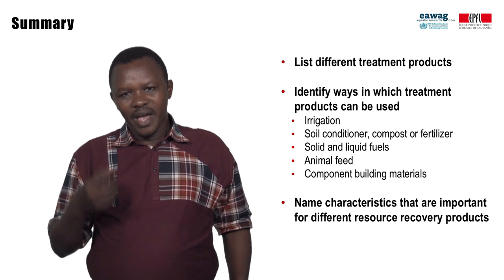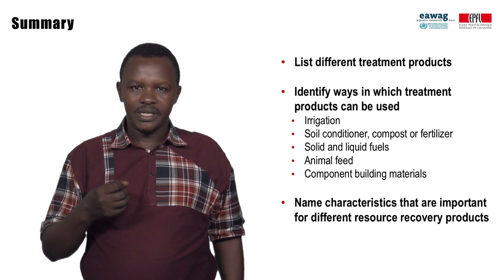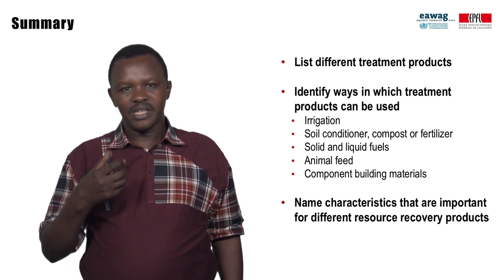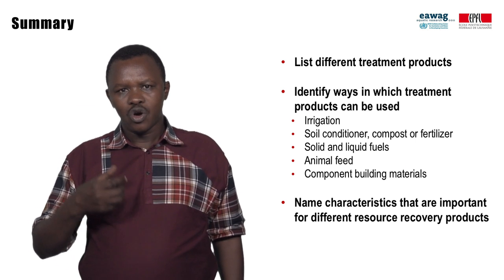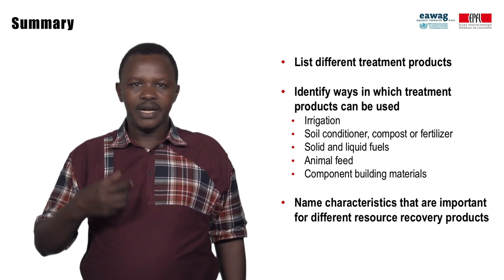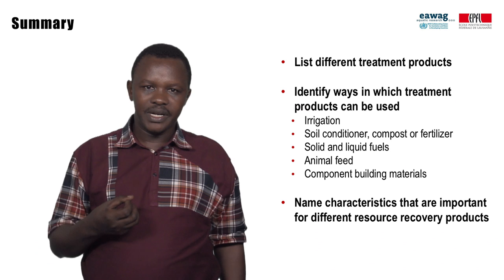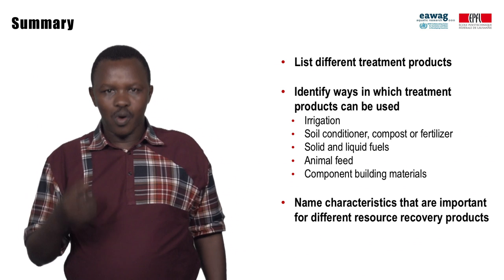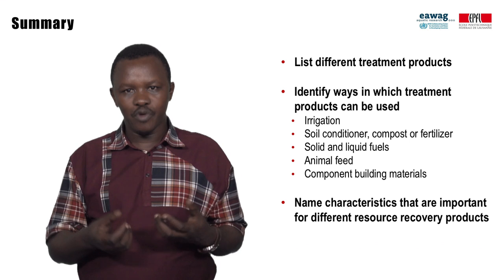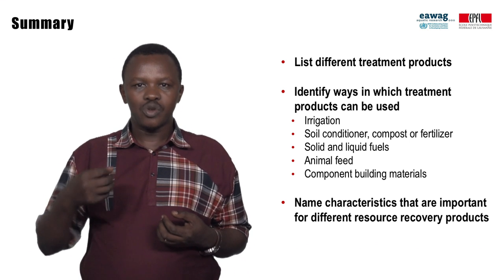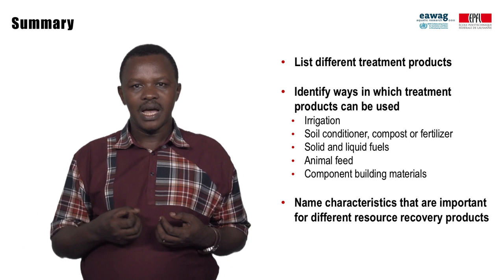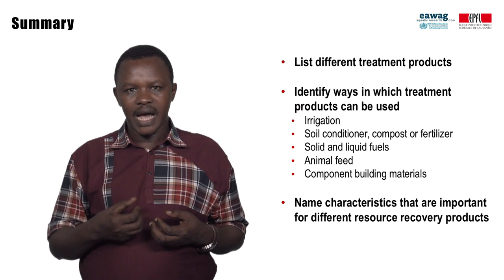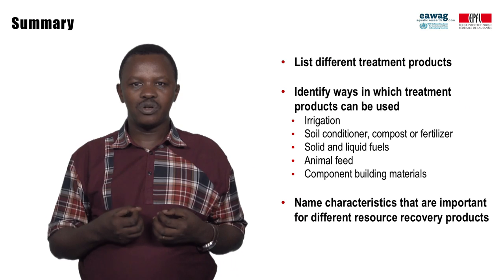In this module, we have learned what some products from treatment are and how they can be used. This includes effluent for irrigation, sludge and compost as a soil conditioner, solid and liquid biofuels, and plants as animal feed and as a component in building materials. Characterization of treatment products for parameters such as the calorific value as a solid fuel and the ratio of nutrients as soil conditioner, compost, or fertilizer are important to meet market needs. Helminth eggs and E. coli are important indicators to ensure protection of public health.